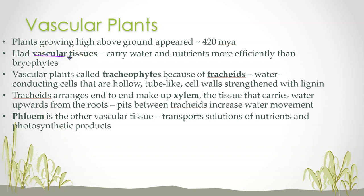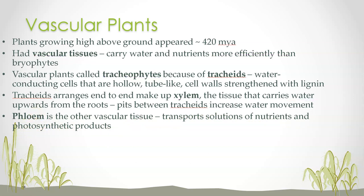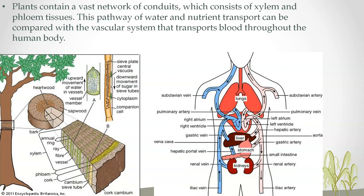Vascular tissues are, according to secular evolution, an extreme advantage for plants — they carry nutrients more efficiently than bryophytes. Vascular plants are also called tracheophytes because of tracheids: water-conducting cells that are hollow and tube-like. Tracheids arrange end-to-end to make up xylem, which carries water. Some may remember this from life science. Phloem transports solutions of nutrients and photosynthetic products — food. Vascular tissue is similar to our circulatory system: tubes inside our body carry nutrients, hormones, and oxygen. Plants have tubes too, and they're pathways allowing water and nutrients to be transported.